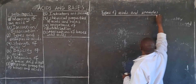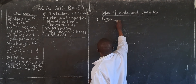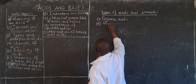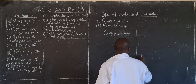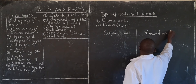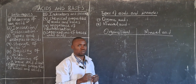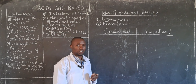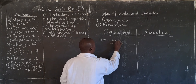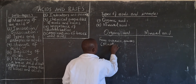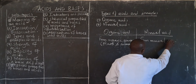Types of acids and examples: there are basically two types of acids — organic acids and mineral acids. Organic acids come from organic sources, which are strictly plants and animals. Mineral acids come from mineral sources, which include metallic minerals and inorganic compounds.